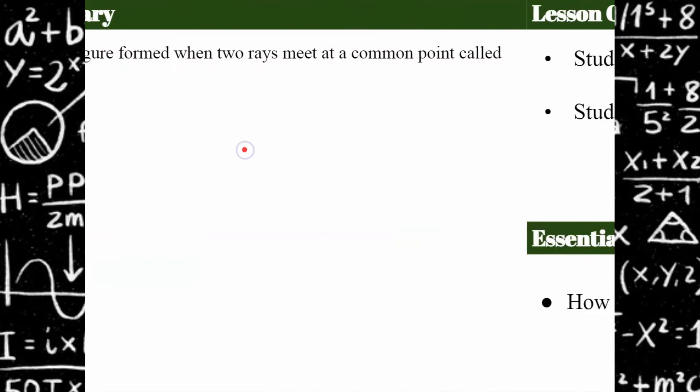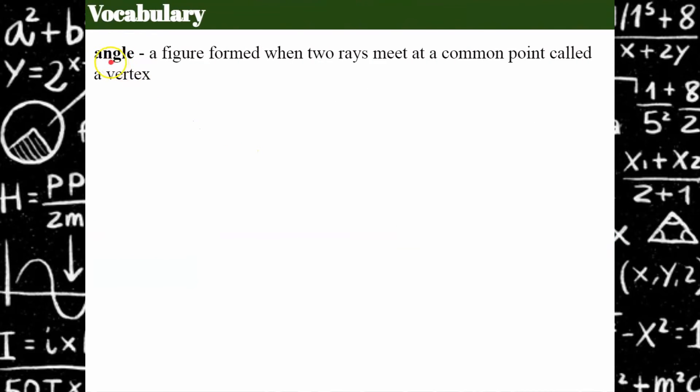Okay, so here we go. So first, let's understand what an angle is. An angle is a figure. It's formed when two rays meet at a common point. We call that common point the vertex.